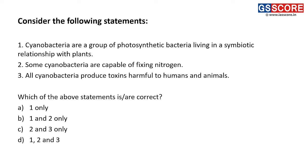Next question: consider the following statements. First — cyanobacteria are a group of photosynthetic bacteria living in symbiotic relationship with plants. This is a correct statement. Cyanobacteria are primarily found in water but also present in soil. They live in association with plants and can carry out photosynthesis. First statement is correct.